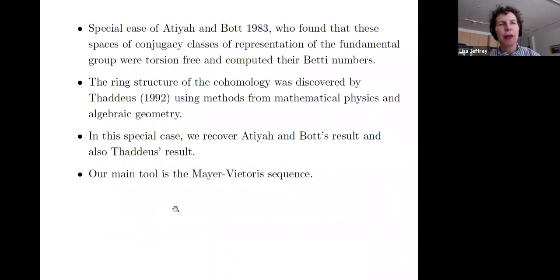This space was well studied by Desale and Ramanan in 1976 paper, and has been identified with the space of planes in the intersection of two quadrics in a Grassmannian. This space was a special case of spaces studied by Atiyah-Bott in their landmark paper on the Yang-Mills equations on Riemann surfaces. Atiyah and Bott found, for general genera, not just genus 2, that these spaces of conjugacy classes of representations of the fundamental group were torsion-free, and they computed their Betti numbers.